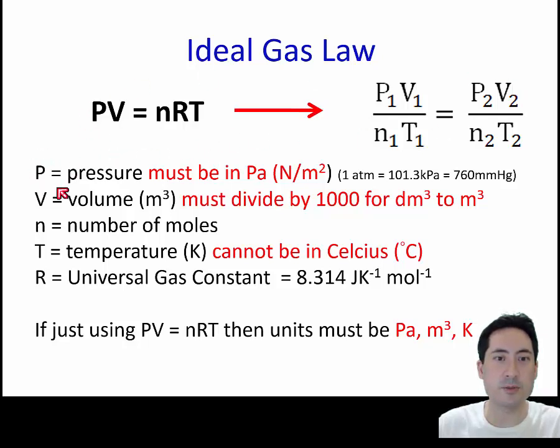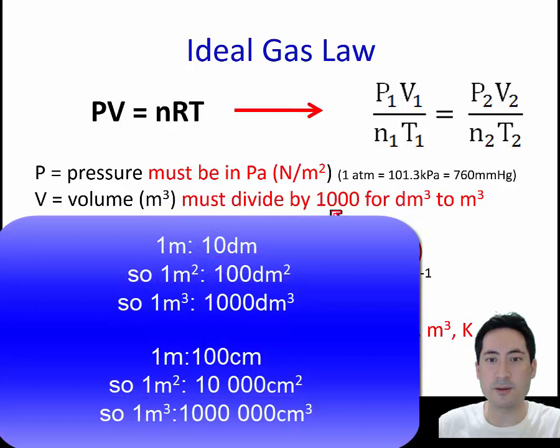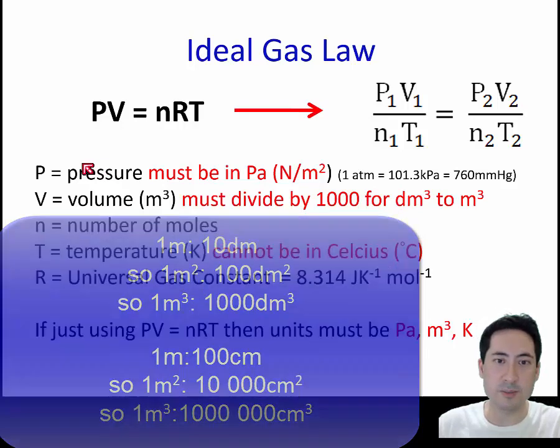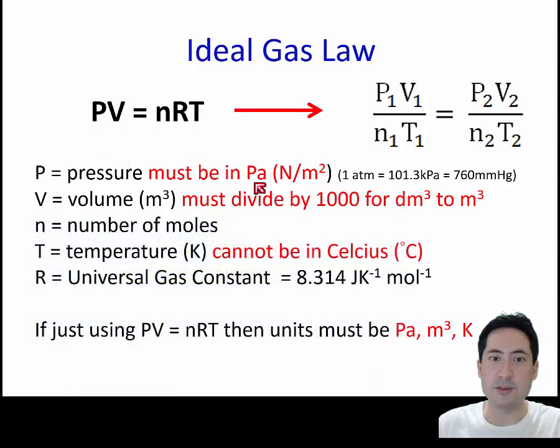That's one thing you can do with the ideal gas law. Most importantly, what students have most problems with, is that these units are slightly different to our stoichiometry. We're not using decimetres cubed, we're using metres cubed, and there's a factor of a thousand. If it's centimetres cubed to metres cubed, it's actually a factor of a million. Another big thing is the pressure is in Pascals. Know those conversions there. Temperature is in Kelvin. These unit conversions really stuff people up quite a lot.